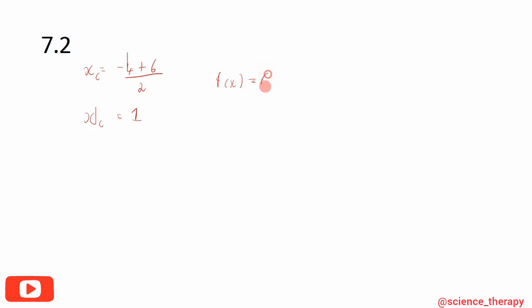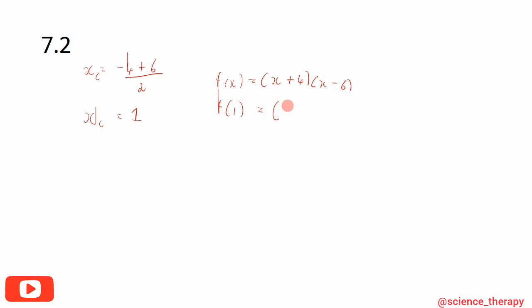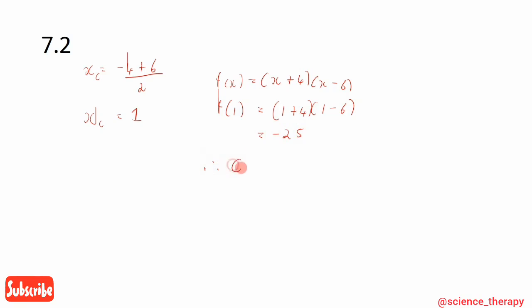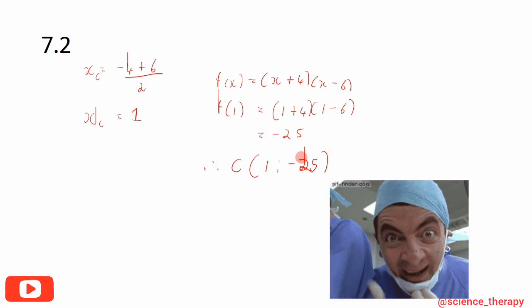Now we substitute x = 1 into f(x) = (x+4)(x-6). That gives (1+4)(1-6) = 5 × (-5) = -25. Therefore the coordinates of C are (1, -25).